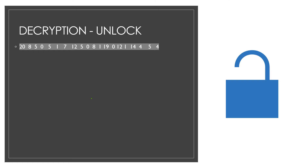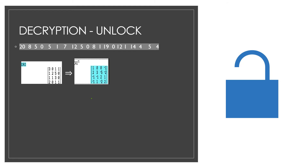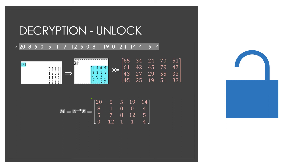Now let us try to decrypt the message we got and recover the original message. In order to do this, we know that the coded matrix is given by A, and from that we can easily get A-inverse. We can enter this in our graphing calculator to get A-inverse. The message M is then A-inverse times X. When we multiply A-inverse and X, we get back the message matrix, and when we convert it we get 'the eagle has landed.'